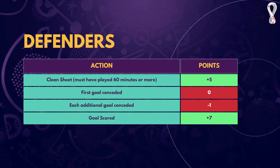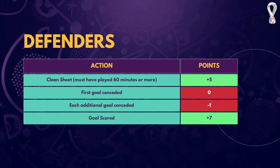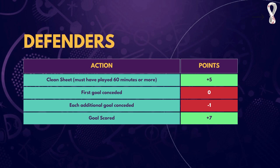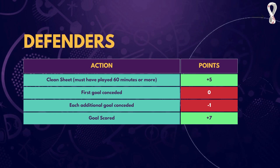For defenders, a clean sheet requires 60 minutes played or more — compared to 70 minutes for a goalkeeper — and gives plus 5. For the first goal conceded it's 0 points, and for every additional goal conceded beyond the first it's minus 1. For every goal scored by a defender it's plus 7. Try to get in defenders who are goal scorers for their team, and avoid defenders from teams with a tendency to concede a lot of goals, as you'll be hit with minus 1 for every goal after the first.